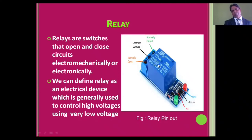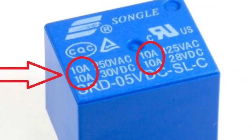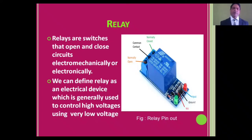On this relay we can see some ratings written on it: 10 ampere 250V AC — this is for India; 10 ampere 125V AC — this is for USA; then 10 ampere 30V DC; and 10 ampere 28V DC. These are all the ratings. Generally, you can find relays in 6 volt, 12 volt, 24 volt, etc.